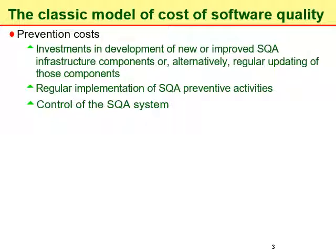Prevention costs are the costs incurred on preventing defects in software systems. These costs include investments in the development of new or improved software quality assurance infrastructure components, or regular updating of those components. For example, defining work procedures and work instructions incurs some costs, as does developing support devices such as templates and checklists.